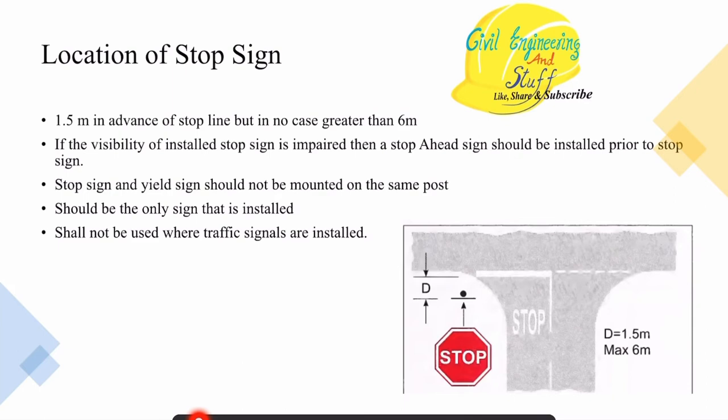Regarding the location of stop signs: stop signs are installed 1.5 meters in advance of the stop line, and in no case greater than 6 meters. We will discuss stop line markings and road markings in the upcoming lectures. If the visibility of the stop sign is compromised, then a 'stop ahead' sign should be installed prior to the stop sign.